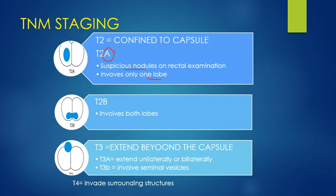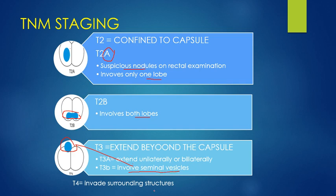T2b involves both lobes of the prostate. When the T3 stage extends beyond the capsule, T3a extends unilaterally or bilaterally. T3b involves the seminal vesicles — this is important. T4 involves the surrounding structures.